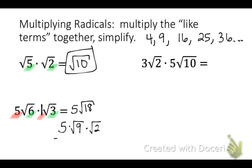We simplify square root 9 to get 3. Then the last step: 5 times 3 equals 15. So the final answer is 15 square root 2. The coefficient out front just gets multiplied in at the very end.